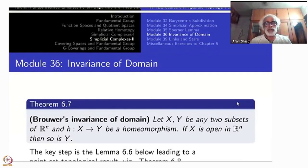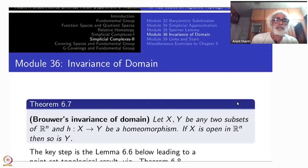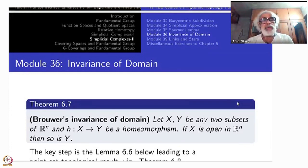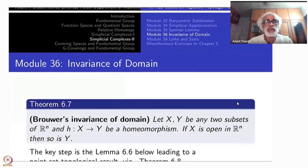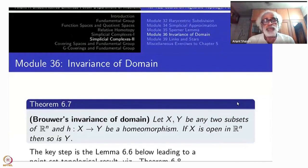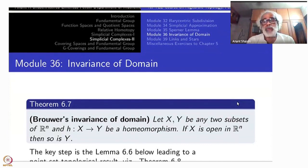Today's topic is the big theorem: Brouwer's Invariance of Domain. We have already seen last time a weaker version of this theorem, namely for N not equal to M, the Euclidean space R^n is not homeomorphic to R^m. This will be a consequence of the big theorem we are going to prove today: if X and Y are two subsets of R^n homeomorphic to each other, and one of them is open, then the other one is also open.